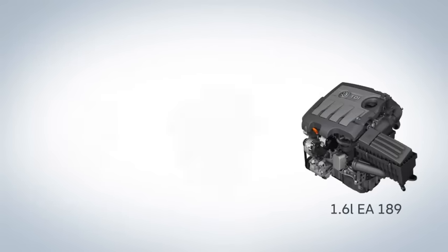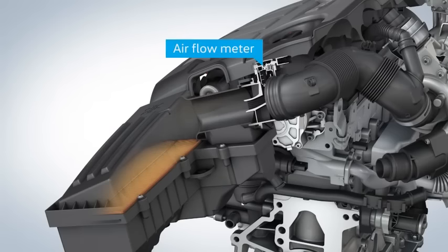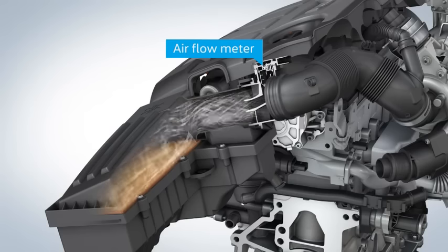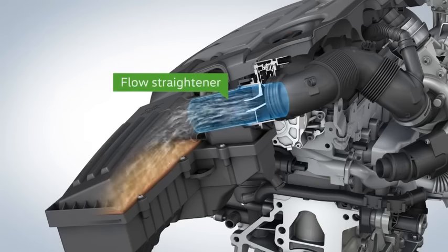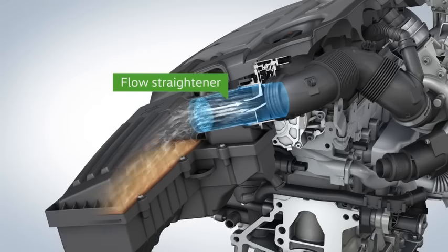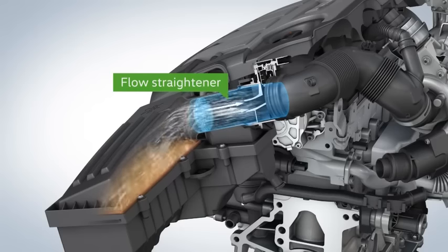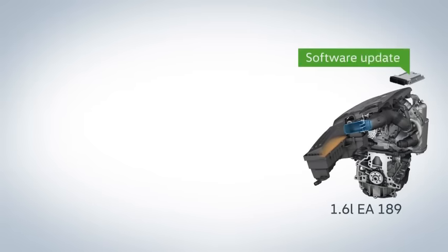For the 1.6 liter engines, the flow towards the air flow meter is additionally improved. The air flow meter determines the mass of the intake air. With this, the engine control doses the fuel quantity and regulates the exhaust gas recirculation rate. A new component, the flow straightener, is set into the air intake. Its grid calms the flowing air in front of the sensor, which delivers improved signals as a result. With these improved signals, the engine control can reduce emissions actively. Further developed software features are added. They ensure a more accurate control of the combustion. This refitting will take no longer than one hour.